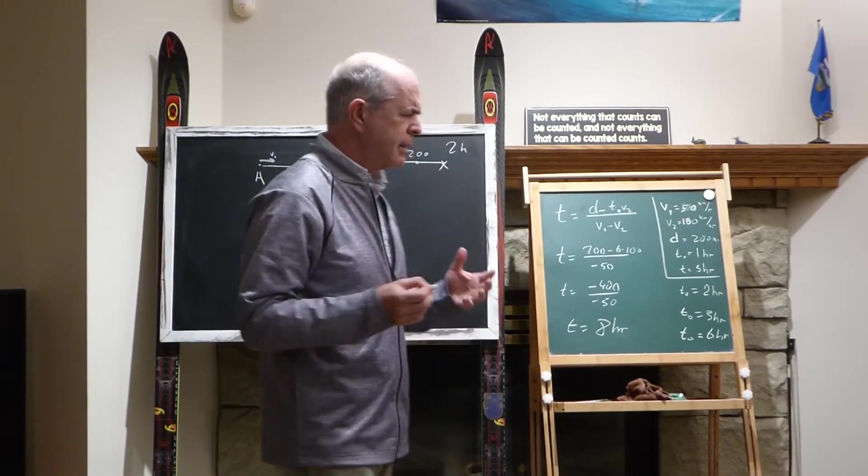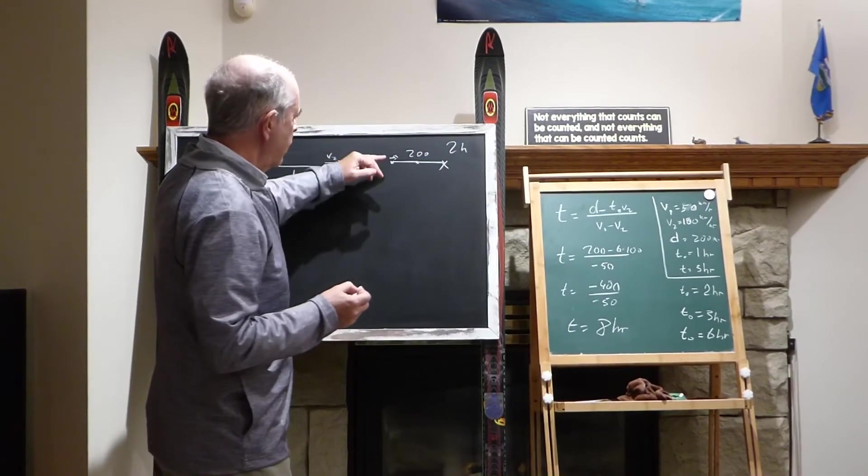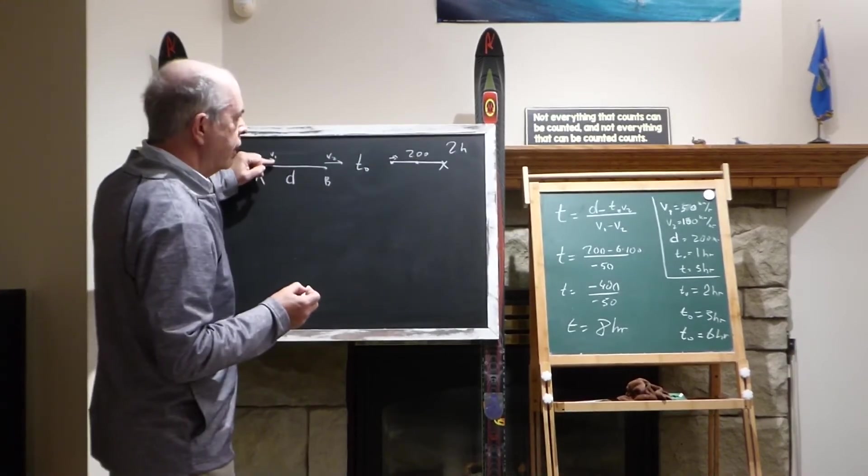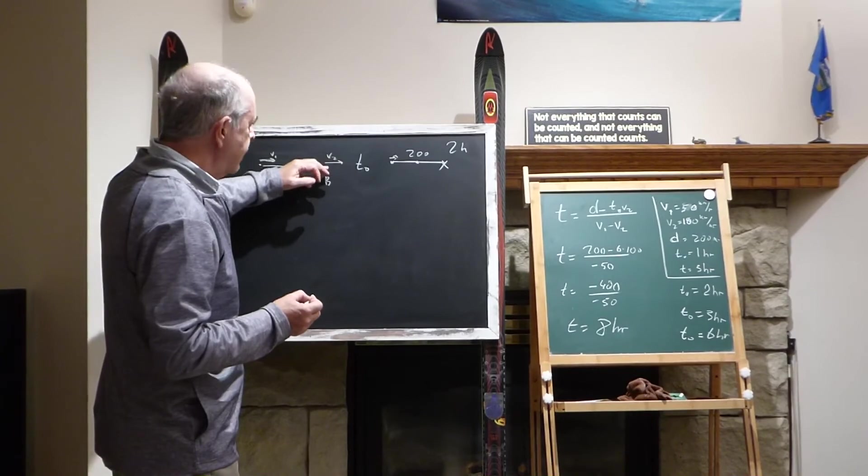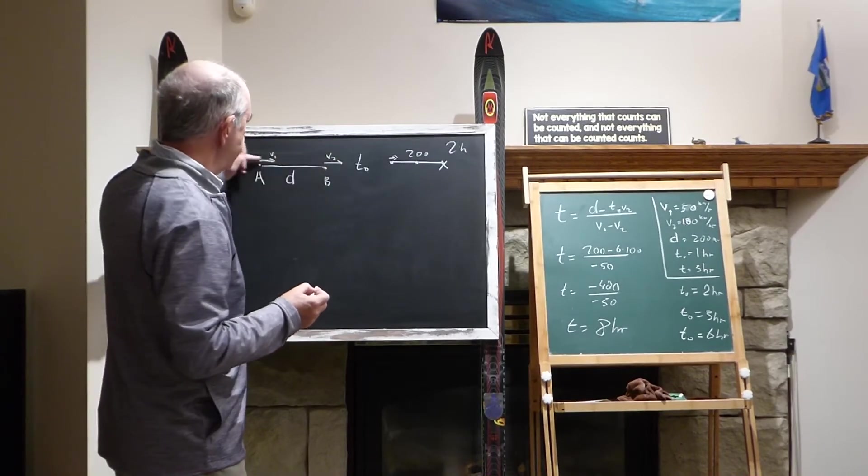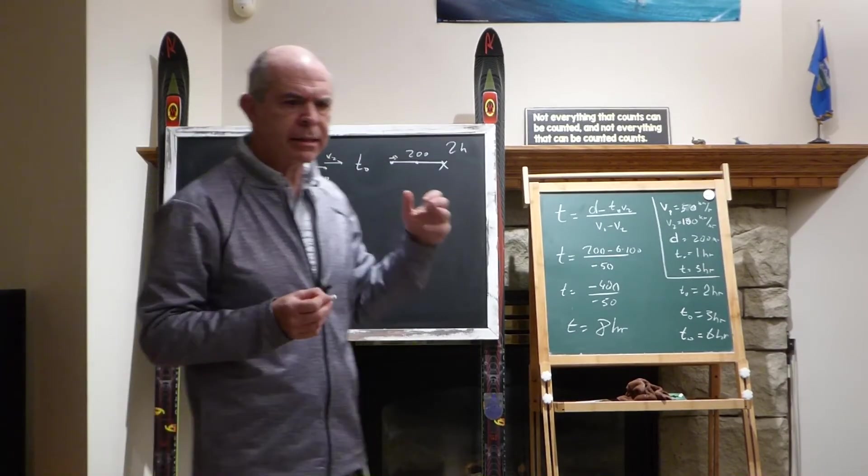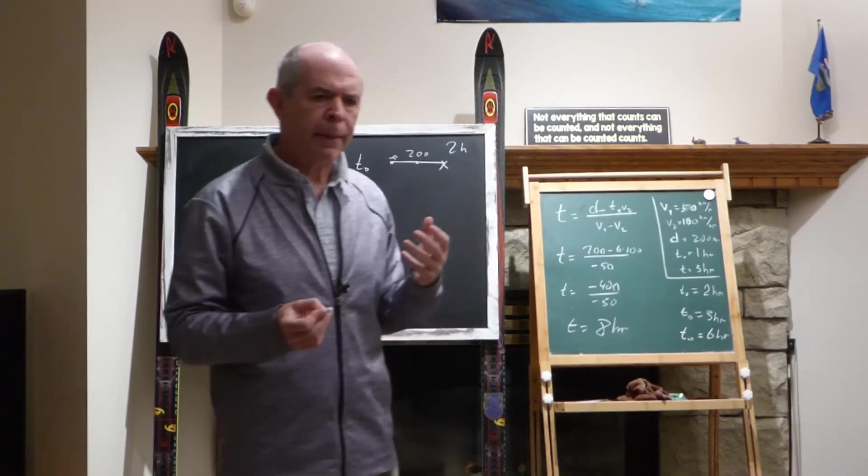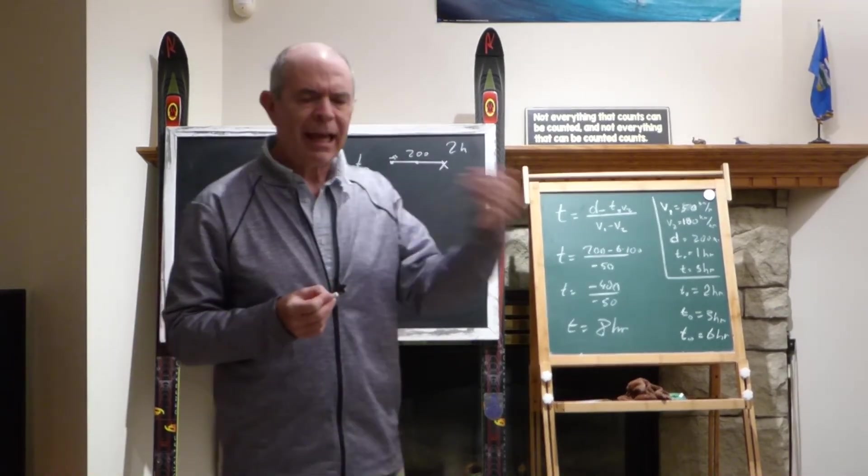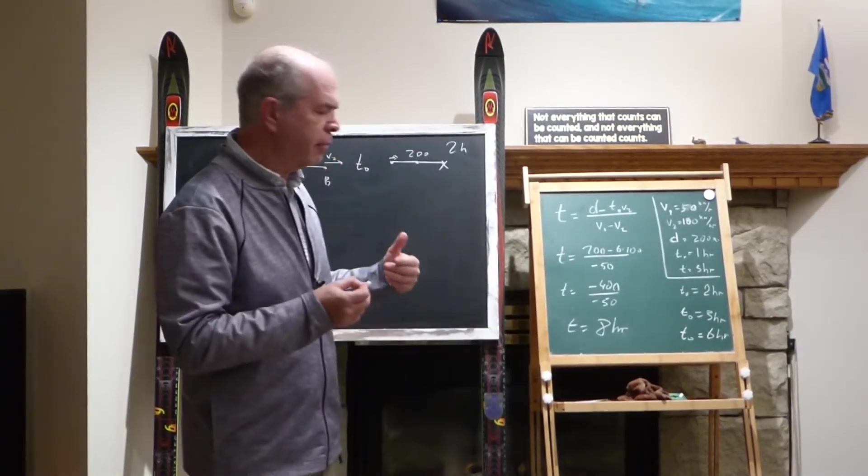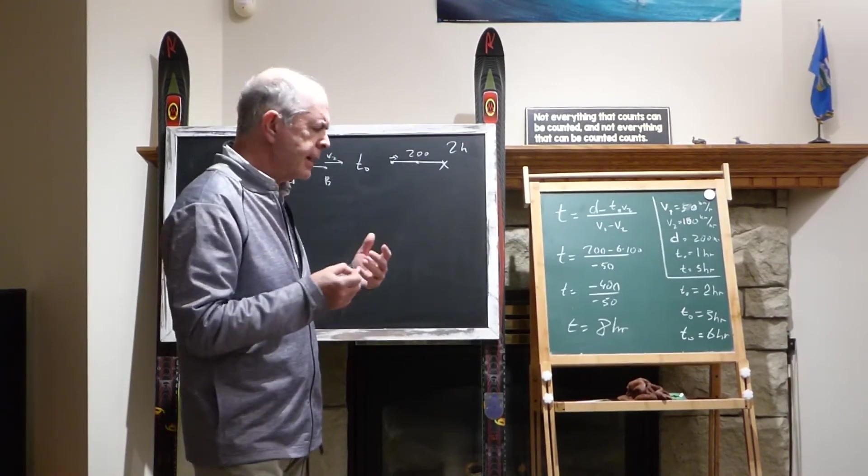And that's kind of strange. We just talked about that V1 is moving 50, and this is moving 100. So how is it possible that the car that's going slower will catch up to the car that's going faster?